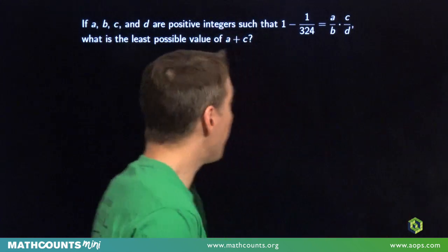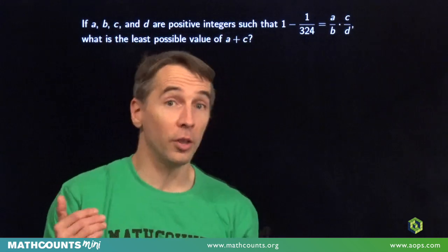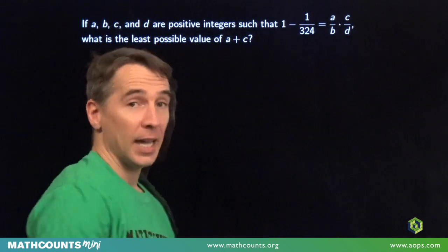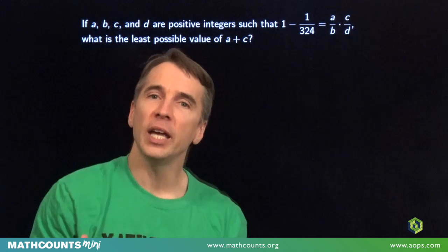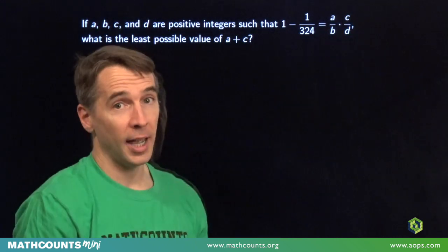Now in this problem, A, B, C, and D are positive integers, such that 1 minus 1/324 equals the product of A/B and C/D. We have to find the least possible value of the sum of these numerators, A and C.